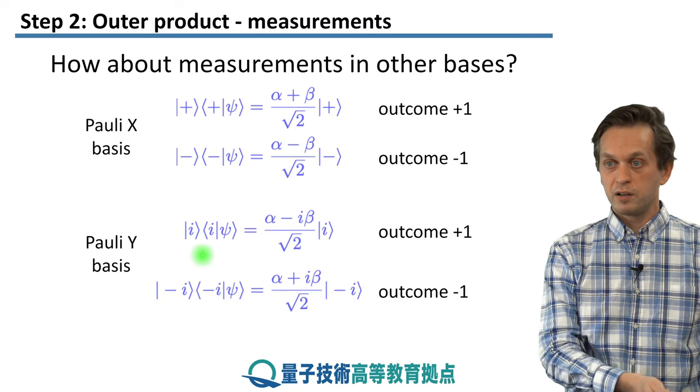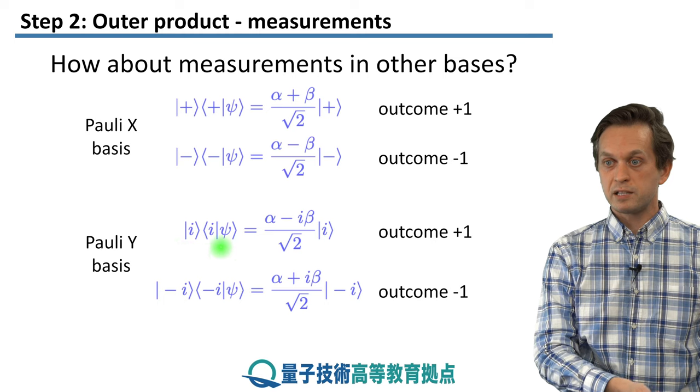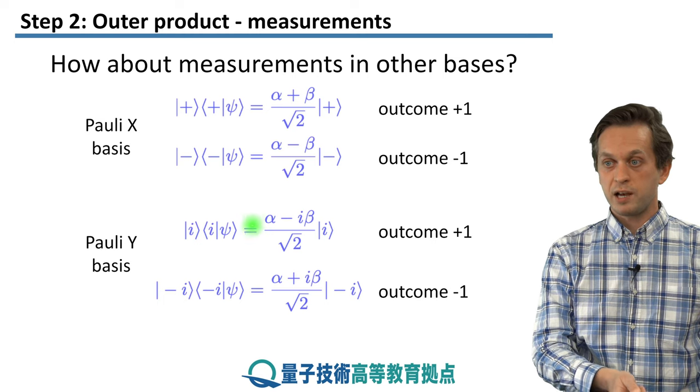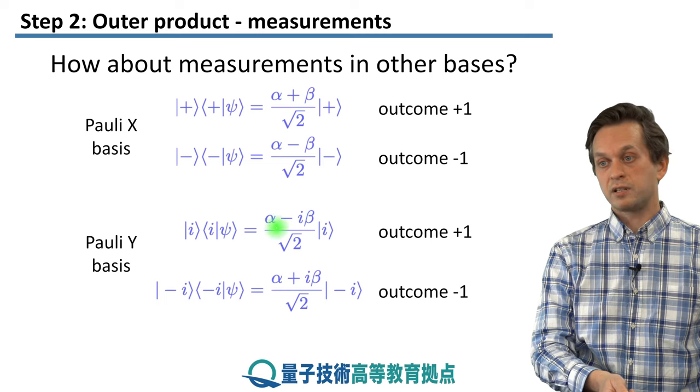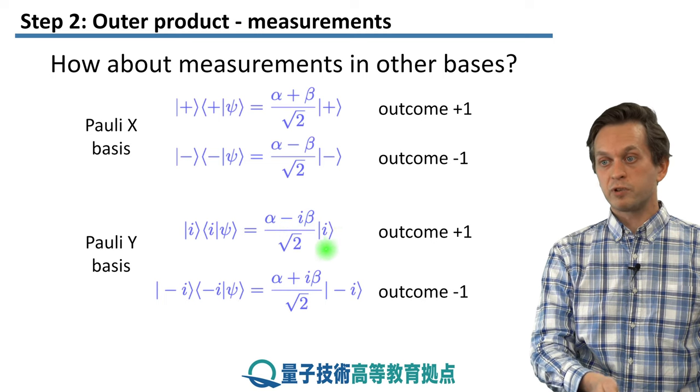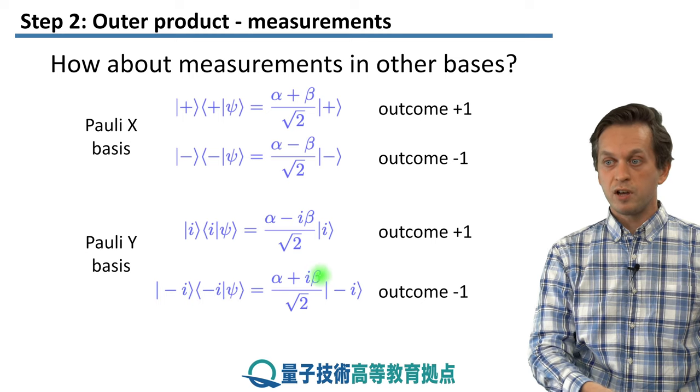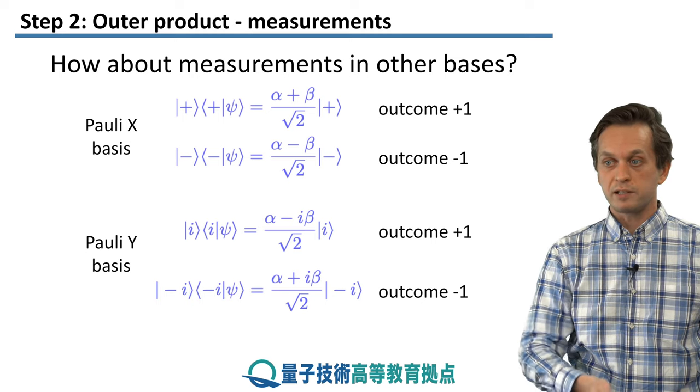And it works in the same way for the Pauli-Y basis for both plus 1 and minus 1 outcomes. So again, this time we take the basis states for the Pauli-Y and we form the outer product. We apply it to psi. We get a different complex scalar, but we are projecting onto i. And when we have the outer product of minus i with itself, we are projecting onto the minus i state.